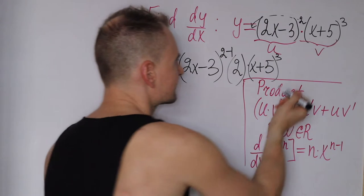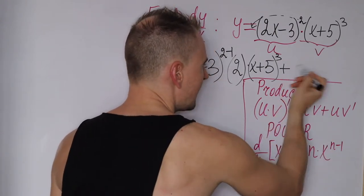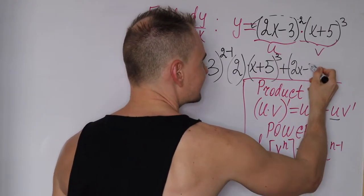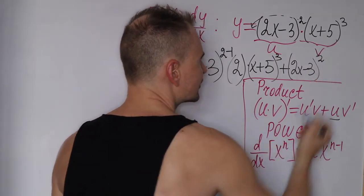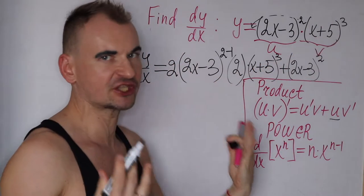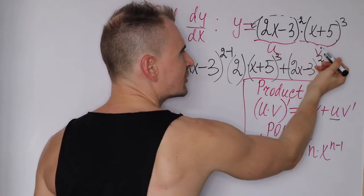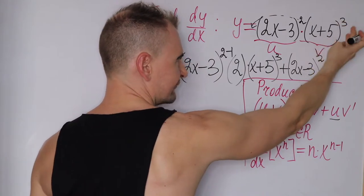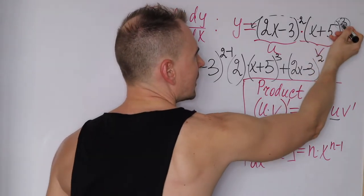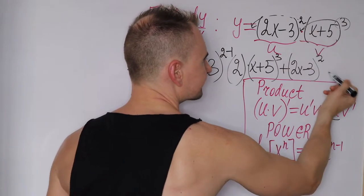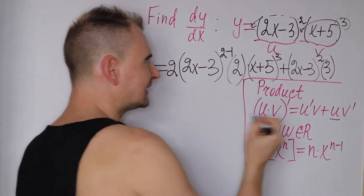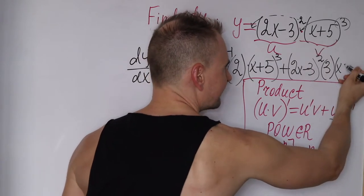Moving on — plus, according to the product rule, I'm going to rewrite the first function u: (2x minus 3) squared goes here as is. Now I'm going to take the derivative of v, the second factor. You have a power of 3, so use the power rule: bring the power in front as a coefficient — multiply by 3 — and reduce the power by one, keeping (x plus 5) as is, with the power becoming 3 minus 1.